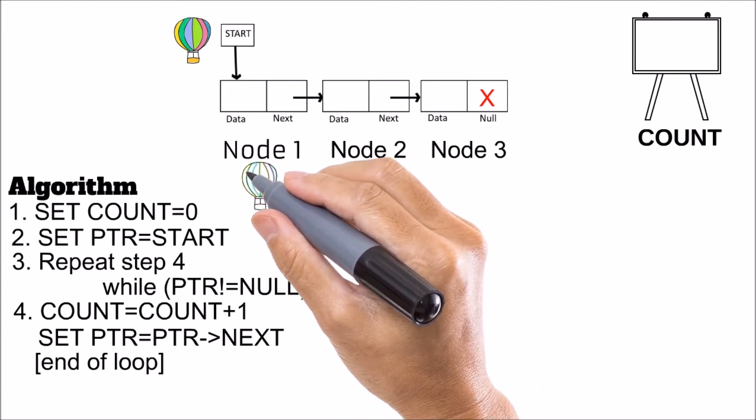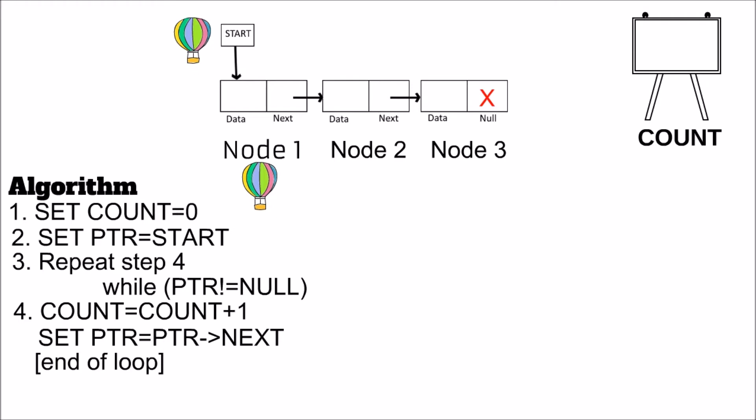Let us understand this by the diagram. Now when we visit the first node with our PTR, we have the operation count equal to count plus 1.